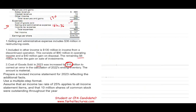This adjustment should go into retained earnings, not into cost of goods sold. We will prepare a revised income statement reflecting this fact. Assume the income tax rate is 20–25%, applied to all income statement items, with $10 million shares of common stock outstanding.